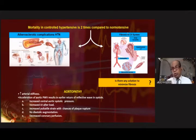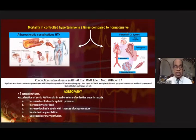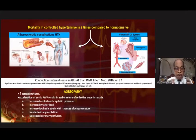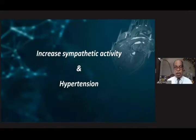Is there any solution to minimize this fibrosis? We do not have any dedicated trial, but very interesting data emerged from the long-term follow-up of the ALLHAT trial, published in 2016, which showed a significant reduction in conduction system disease with lisinopril compared to chlorthalidone and amlodipine, despite the fact that blood pressure was higher in the lisinopril arm. More trials are needed.